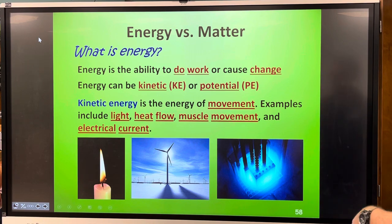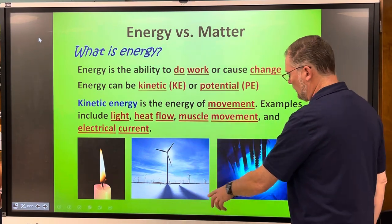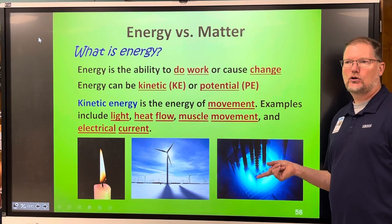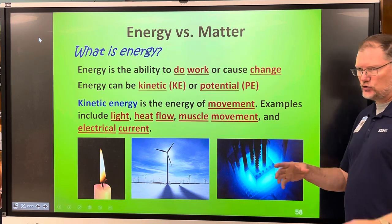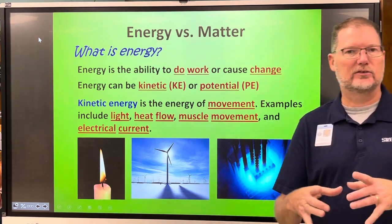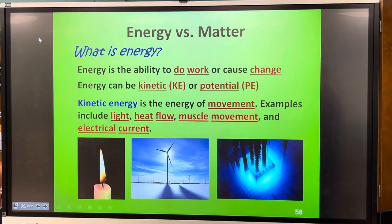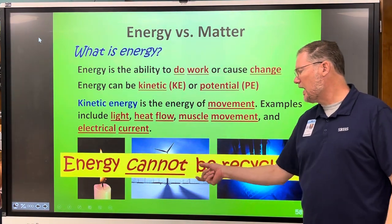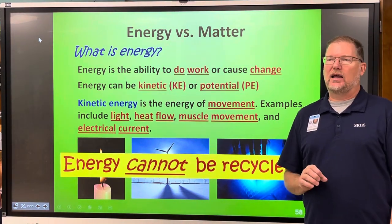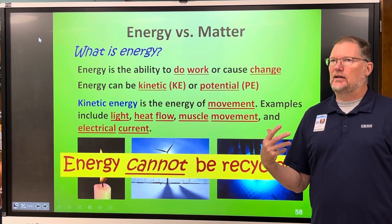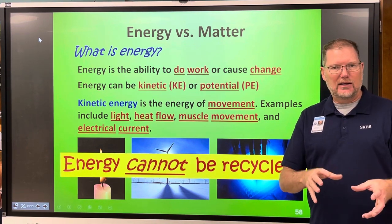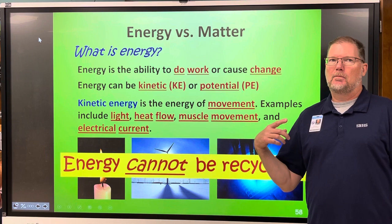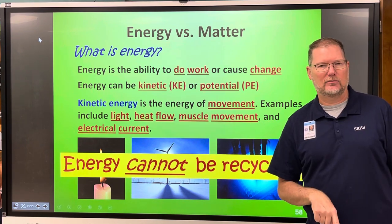This is a candle, this is a wind power turbine, and this is a nuclear fission core — those are highly concentrated uranium rods in water. There's a box that says 'energy blank' — fill in: energy cannot be recycled. Once you use energy, it gets converted into something else, a different kind of energy, but you can't recycle it — you have to convert it from something else to get it back.